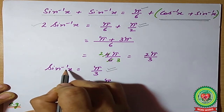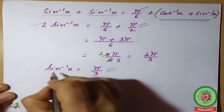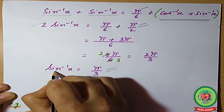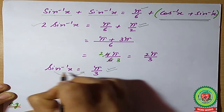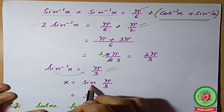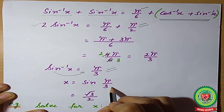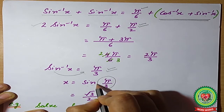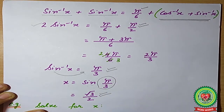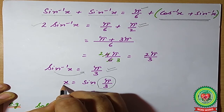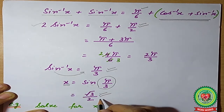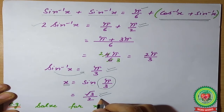Shifting sin⁻¹ to the other side converts it: x = sin(π/3). The value of sin(π/3) is √3/2. Since there is only one solution, no verification is needed.